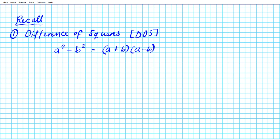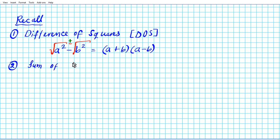The procedure involves expressing the difference of squares as the sum and the difference of the square roots of the squares. You take the root of the first term and the root of the second term, and then express the roots as a sum and a difference. That's how we end up with this result. The second case to keep in mind has to do with the sum of squares.